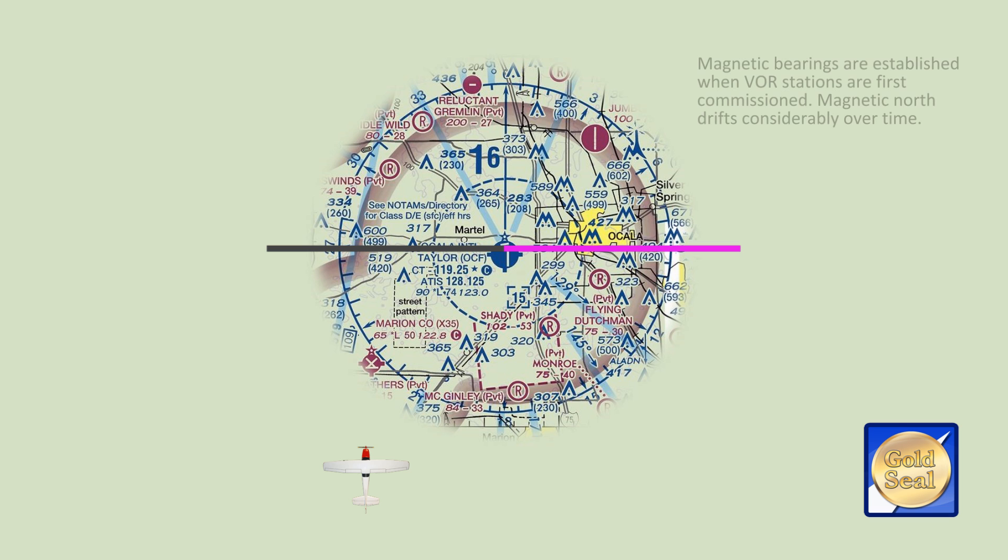Not only do they have a specific magnetic bearing, but they are also named with that bearing. The 090 radial starts at the VOR and proceeds eastward on a 090 bearing. It is named the 090 radial just like a highway is named. The radial on the opposite side of the VOR is the 270 radial. That is its name and also its magnetic bearing. Radials always proceed away from the station. You may fly toward the station on the radial, but the radial's name remains unchanged.